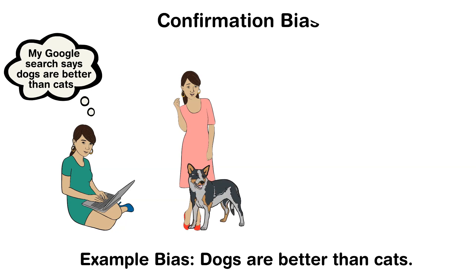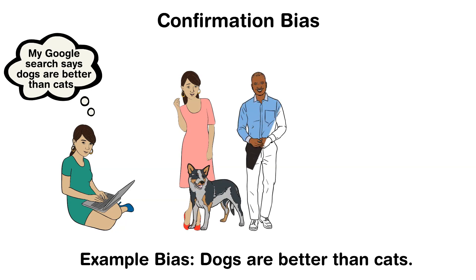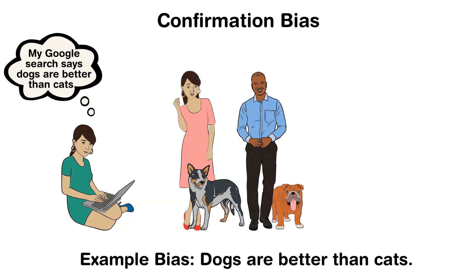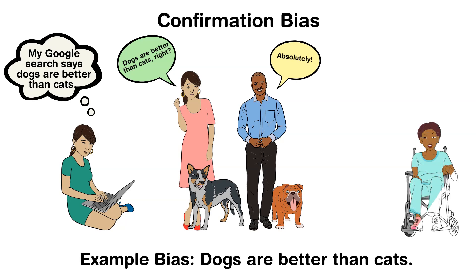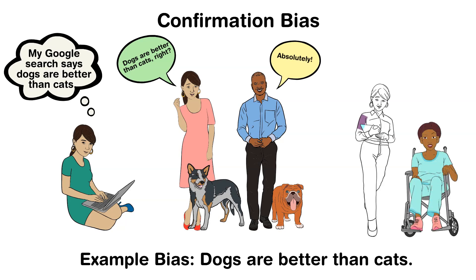In psychology, we call this confirmation bias — but we'll save this concept for another time. The point is, we surround ourselves with what we believe to be true. So as you can imagine, it can get pretty sticky when you are just flat out not right.